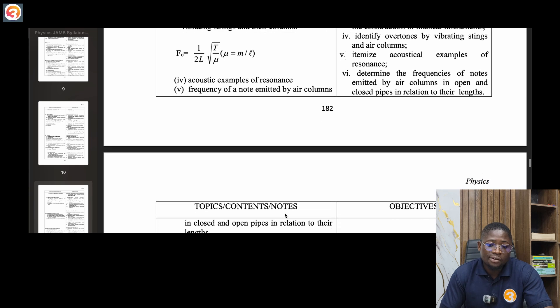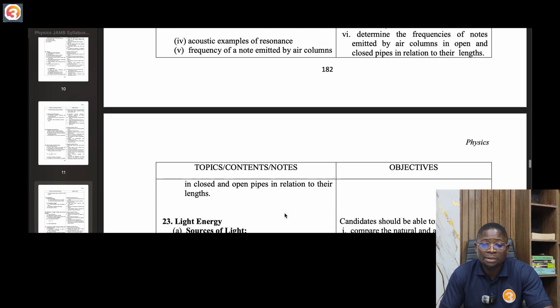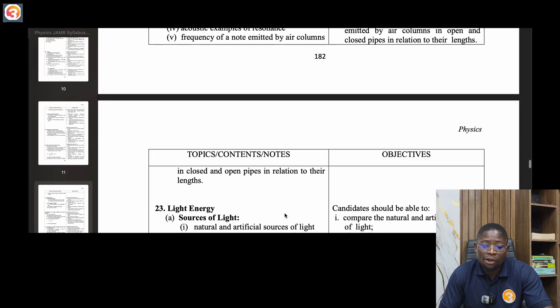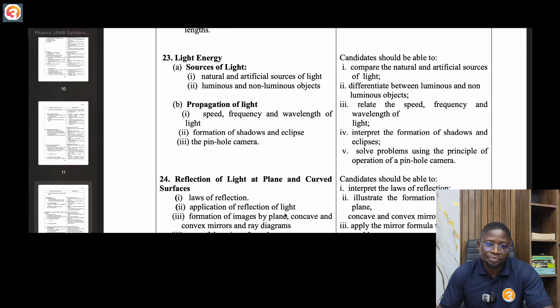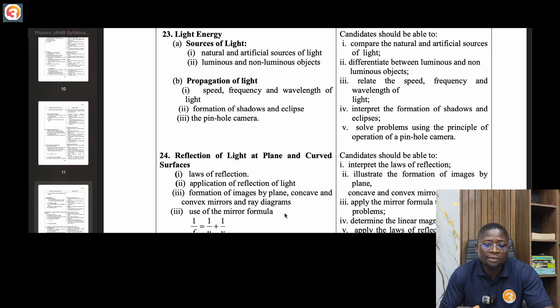Acoustic examples of resonance. Frequency of a note emitted by air columns in closed and open pipes in relation to their length. Twenty-three, light energy. Sources of light, natural and artificial sources, luminous and non-luminous objects, propagation of light, speed, frequency and wavelength of light, formation of shadows and eclipse, the pinhole camera.